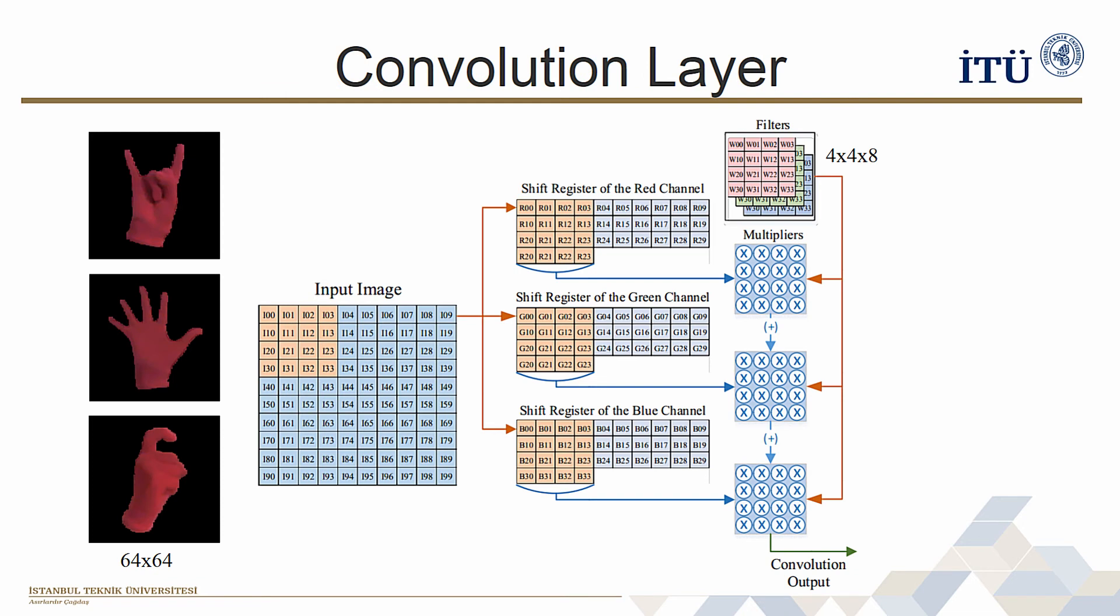The design convolution layers start by reading the input and writing that to a shift register. After that, kernel inputs are read and sent to the multiplier and adder tree. The shifting process of the shift register mimics the sliding convolution kernel over the image and therefore extra hardware is redundant.